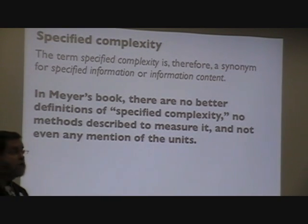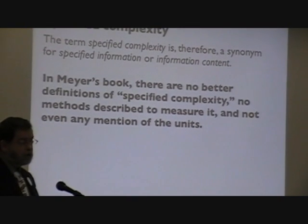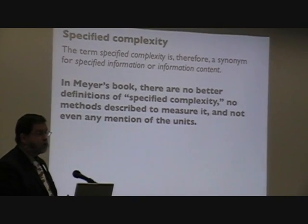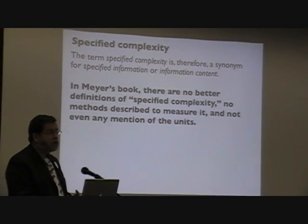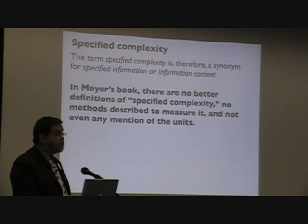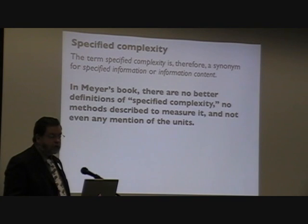There's no better definition of specified complexity, no methods described to measure it, and there isn't even a unit of measurement. In Shannon information theory, we know information is already measured in bits. That's not present in this version of information theory.